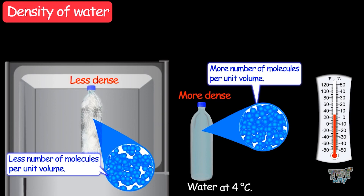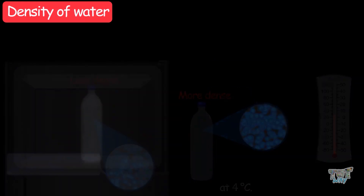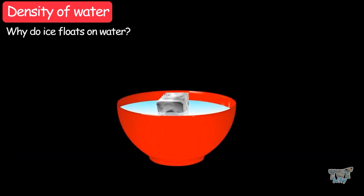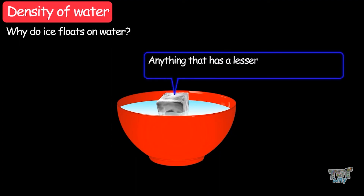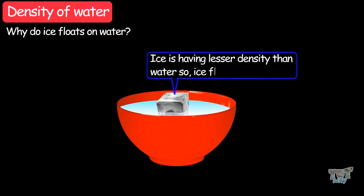Now, can we answer a very interesting question? Why does ice float on water? We know anything that has a lower density than water can float on water. Ice has a lower density than water, so ice floats in water.